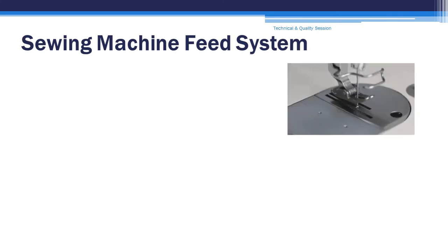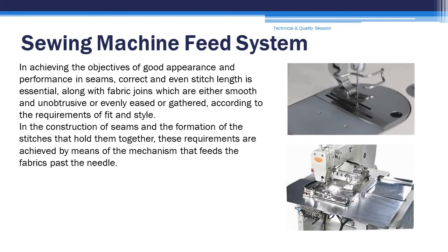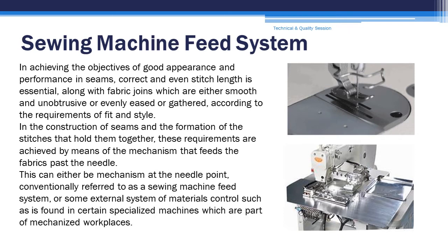Sewing machine feed system. In achieving the objectives of good appearance and performance in seams, correct and even stitch length is essential, along with fabric joints which are either smooth and unobstructive or evenly eased or gathered according to the requirements of fit and style. In the construction of seams and the formation of stitches that hold them together, these requirements are achieved by means of the mechanism that feeds the fabrics past the needle. This can either be a mechanism at the needle point, conventionally referred to as a sewing machine feed system, or some external system of material control such as is found in certain specialized machines which are part of mechanized workplaces.